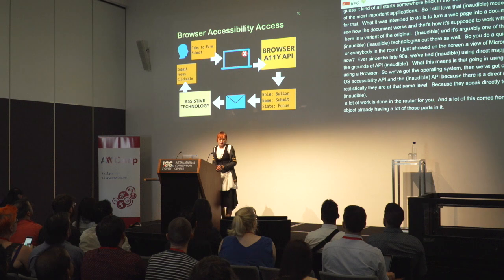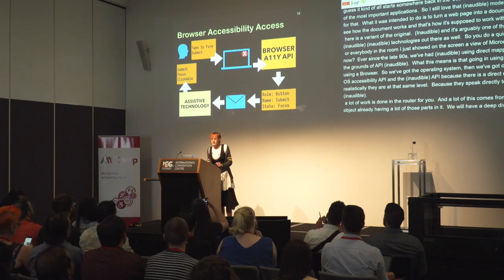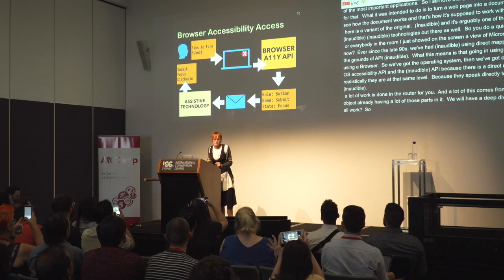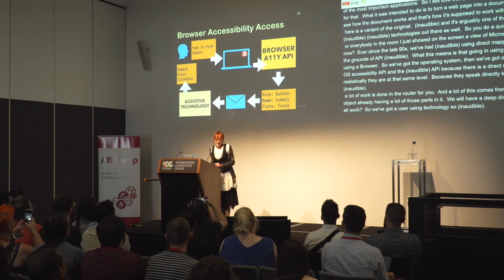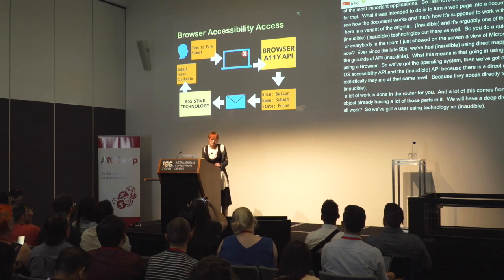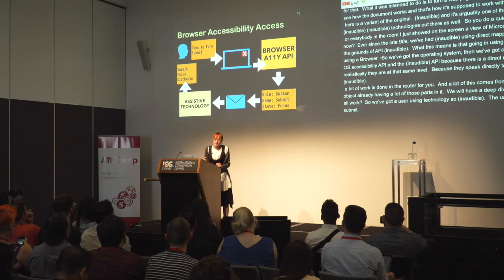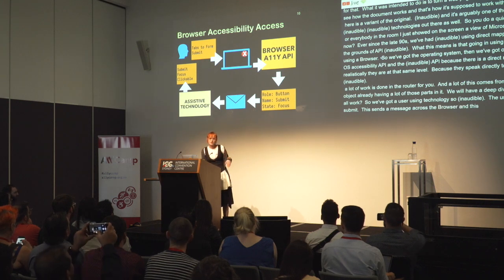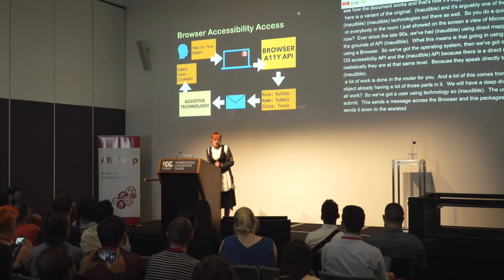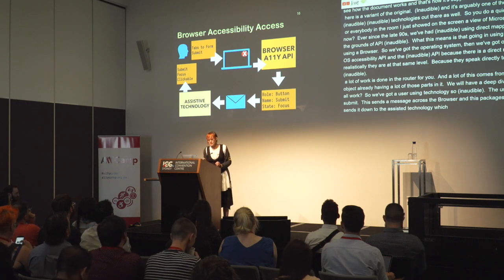So how does it all work? We've got a user using assistive technology — let's say a screen reader. The user tabs to a form submit button. This sends a message across; the DOM sends a message across to the browser accessibility API. This then packages it down into tokens, which sends it across to the assistive technology — the screen reader — which then reads out to the user that it's a submit button, it has focus, and it's clickable.